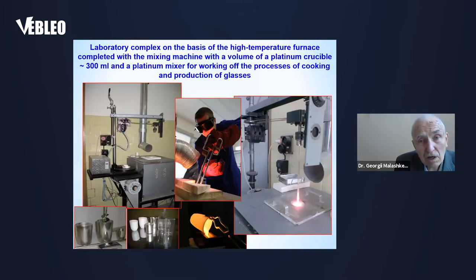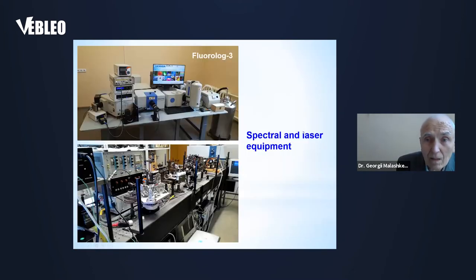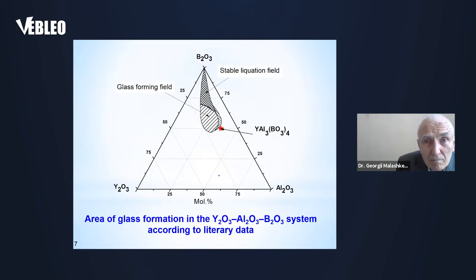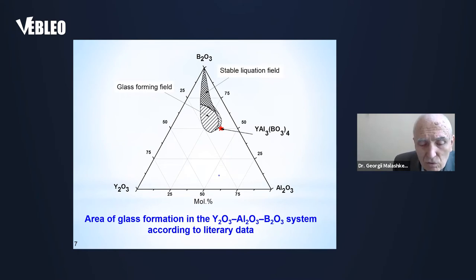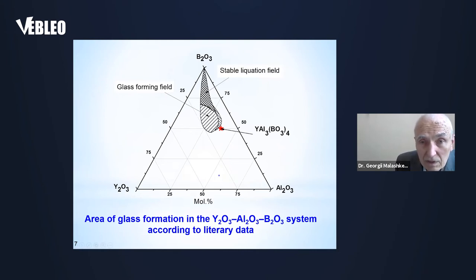Here you can see our technology and spectral and laser equipment. It should be noted that the synthesis of such glasses occurs in relatively narrow fields at temperatures close to 1500 degrees Celsius.